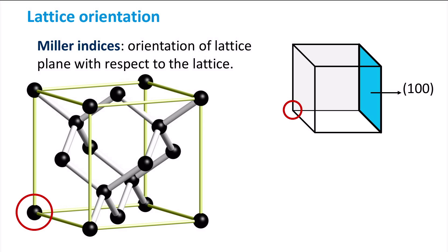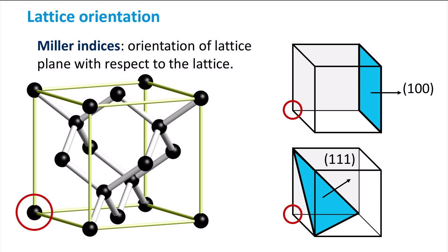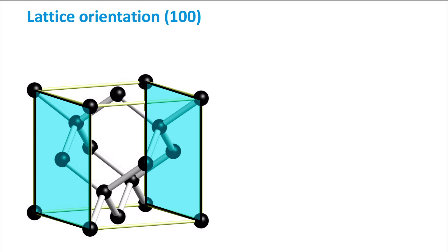For instance, the lattice plane with 1-0-0 orientation is shown here, with respect to the atom marked in red. Another often used orientation is the 1-1-1 direction as shown here below. These two orientations are most commonly used for crystalline silicon solar cells. The difference in lattice orientation is visible at the surface of the material.